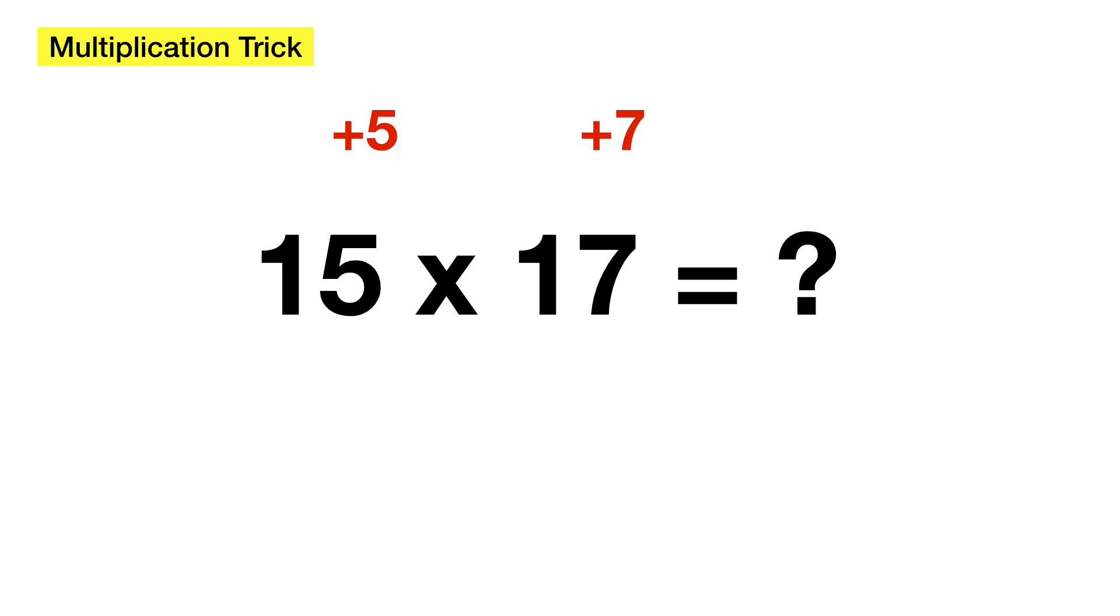Now that we have both of these numbers, we again have to do the same thing. Either 17 plus 5, or 15 plus 7. In this case, both of these answers will result in the same thing, which is 22.